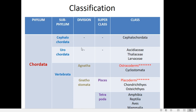Vertebrata has two divisions: Agnatha and Gnathostomata. 'Gnath' means jaw, so Agnatha are vertebrates that lack jaws. Gnathostomata — 'stom' means mouth — are vertebrates that have jaws bordering their mouth. So Agnatha are jawless vertebrates and Gnathostomata are jawed vertebrates.